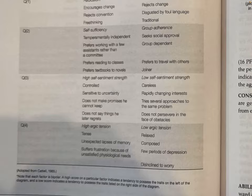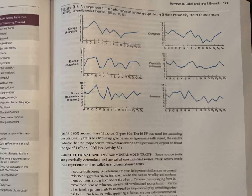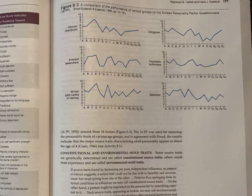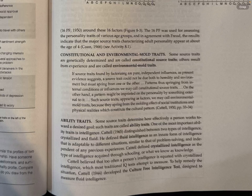Constitutional and Environmental Mold Traits. Some source traits are genetically determined and are called constitutional source traits; others result from experience and are called environmental mold traits. If source traits found by factorizing are pure, independent influences, as present evidence suggests, a source trait could not be due both to heredity and environment but must spring from one or the other. Patterns springing from internal conditions are constitutional source traits. A pattern imprinted on the personality by something external — appearing as factors — Cattell called environmental mold traits, because they spring from the molding effect of social institutions and physical realities that constitute the cultural pattern.